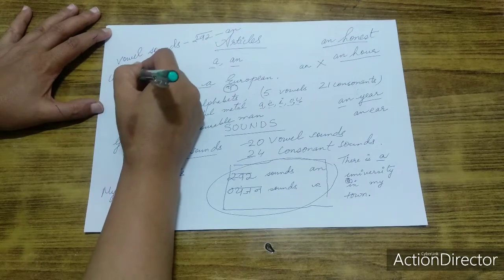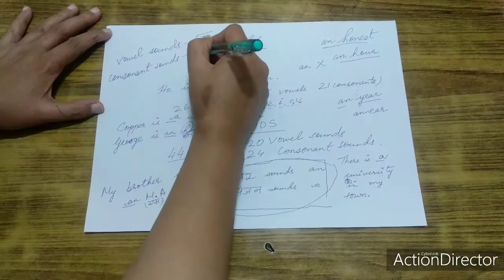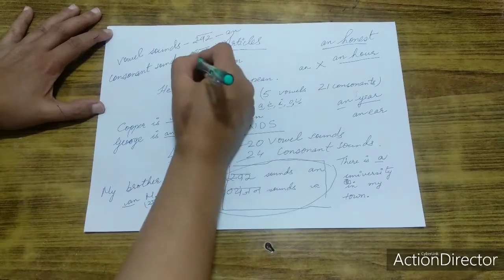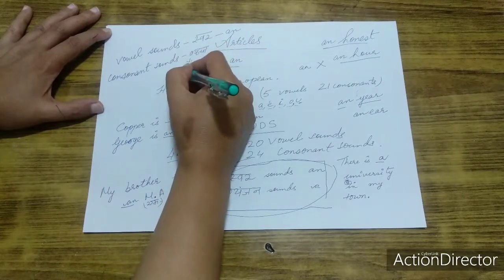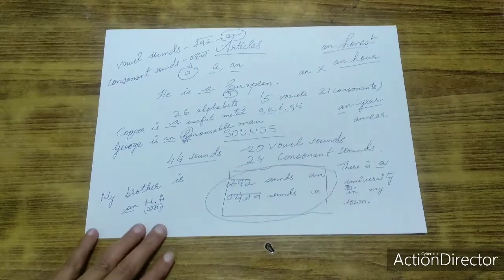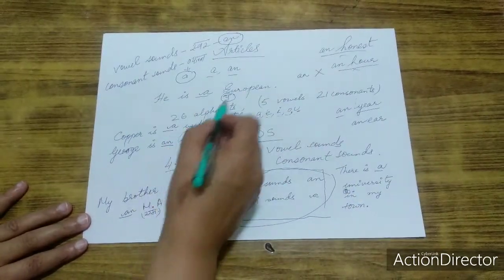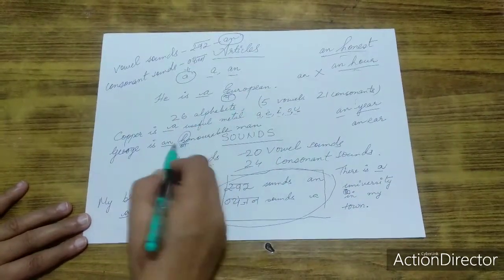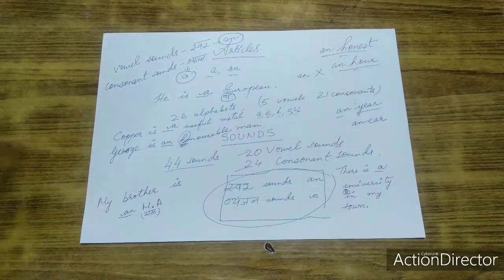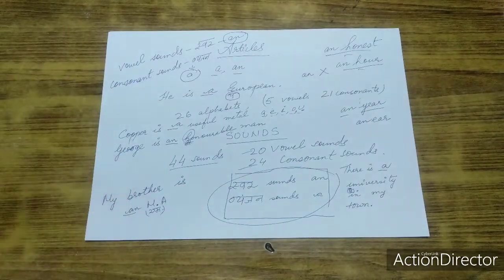And all consonant sounds, which we also call vyanjan, which are Hindi vyanjans. Those consonant sounds will take A. So vowel sounds, here you are getting vowel sounds in honorable. Okay. You are getting vowel sounds over here. And where you have a consonant sound, European for that matter, they will take A.